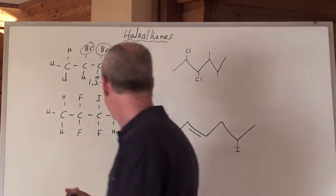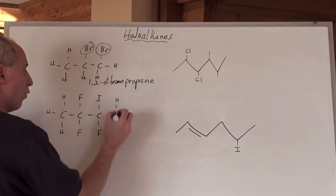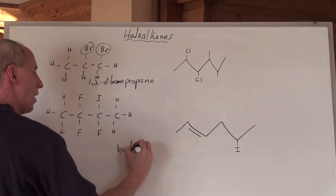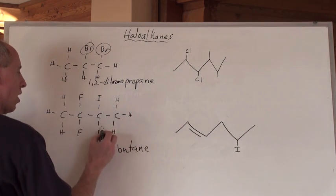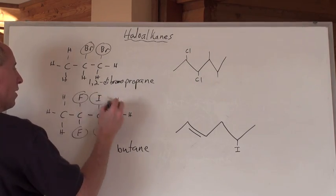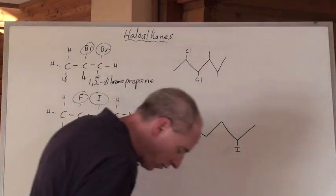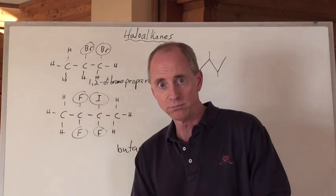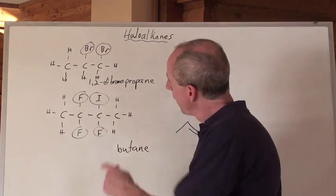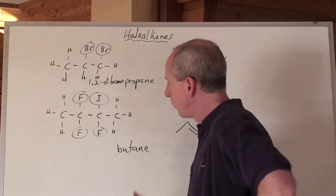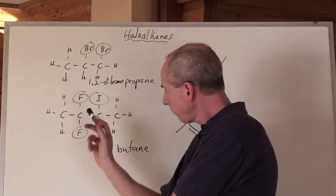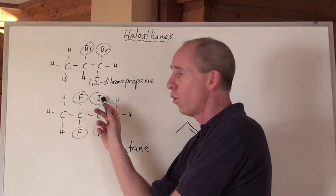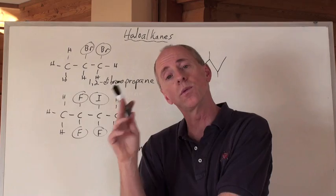So what would this one be? This one is one, two, three, four carbons long, so it's a butane, but it's got these as branches right here. So you've got three fluoros and one iodo. Sounds Japanese almost. So what are you going to do for the naming here? Well, first of all, fluoro comes before iodo alphabetically, so it would go first.